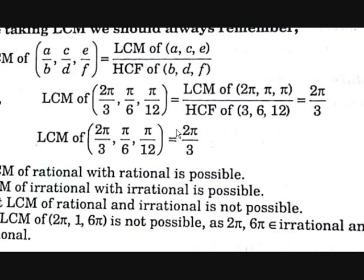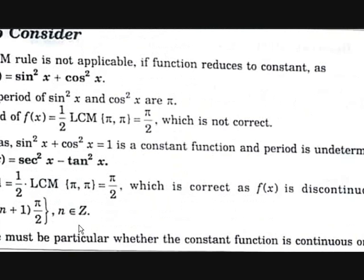LCM of rational with rational is possible. LCM of irrational with irrational is also possible. But LCM of rational with irrational is impossible — for example, LCM of 2π, 1, and 6π is not possible since 2π and 6π are irrational but 1 is rational. Also, the LCM rule is not applicable if the function reduces to a constant, such as sin²(x) + cos²(x) = 1 or sec²(x) - tan²(x) = 1.